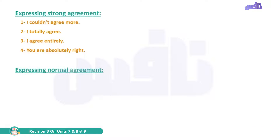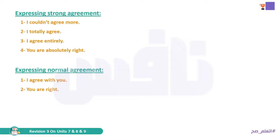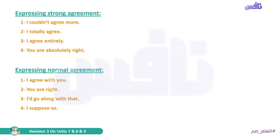Now, expressing normal agreement — when you agree but not strongly. Note that intonation is very important; you can say the same phrase but change the intonation to send a different message. The expressions are: 'I agree with you'; 'You're right'; 'I'd go along with it'; 'I suppose so'; and 'Exactly'.